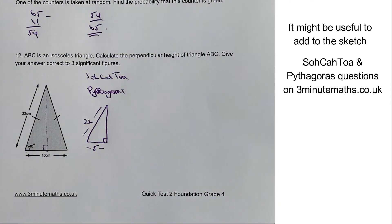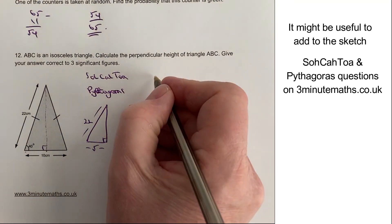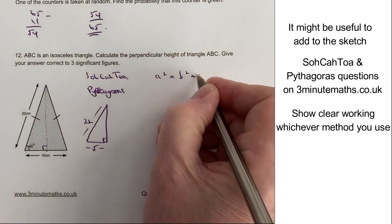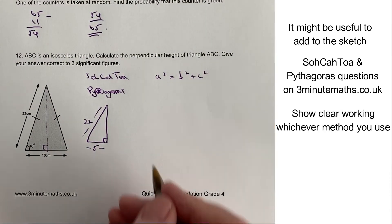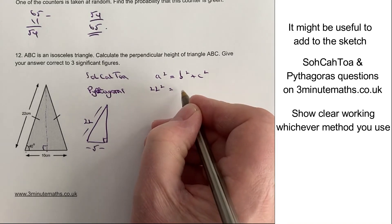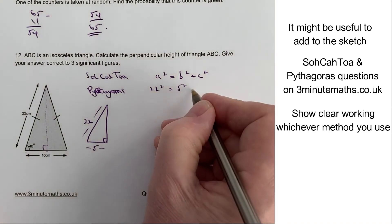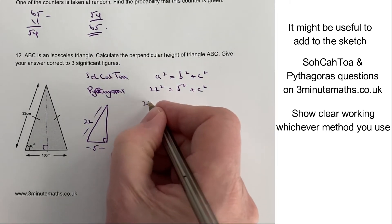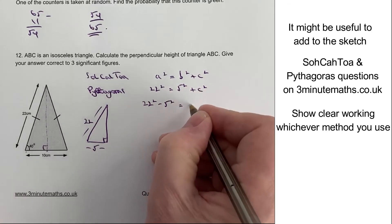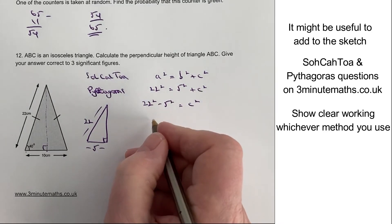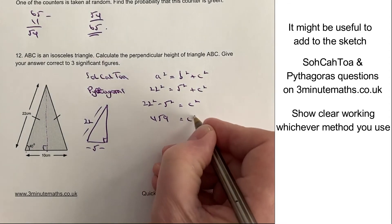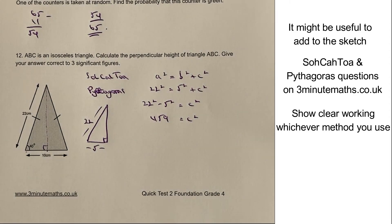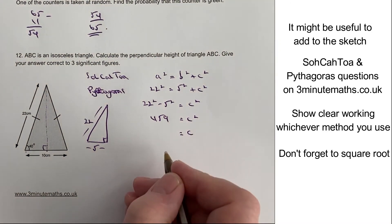Now, I'm very aware that some people will use c squared equals a squared plus b squared. I personally tend to use a squared equals b squared plus c squared. It doesn't really matter. It's whatever works for you. In this particular case, I tend to make a squared the hypotenuse, but I have seen it used both ways. And providing at the end of the day, you get the same answer, then I don't suppose it really matters.